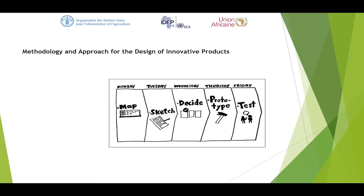Here is a sketch of what the design sprint flow could look like: on Monday you map, on Tuesday you sketch, on Wednesday you decide, on Thursday you do the prototype, and on Friday you test. Of course it's usually not that quick — Monday can even mean a month. This can be a process over six months, but it's just to give you an ideal flow and sense of direction.